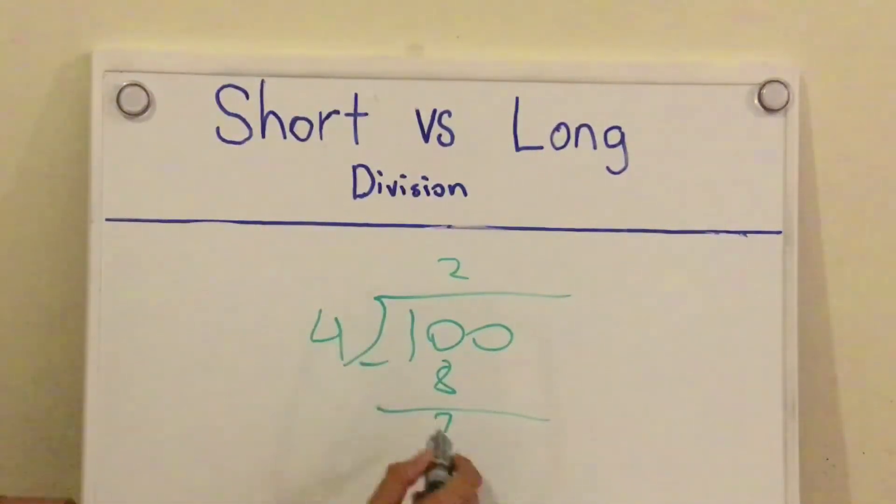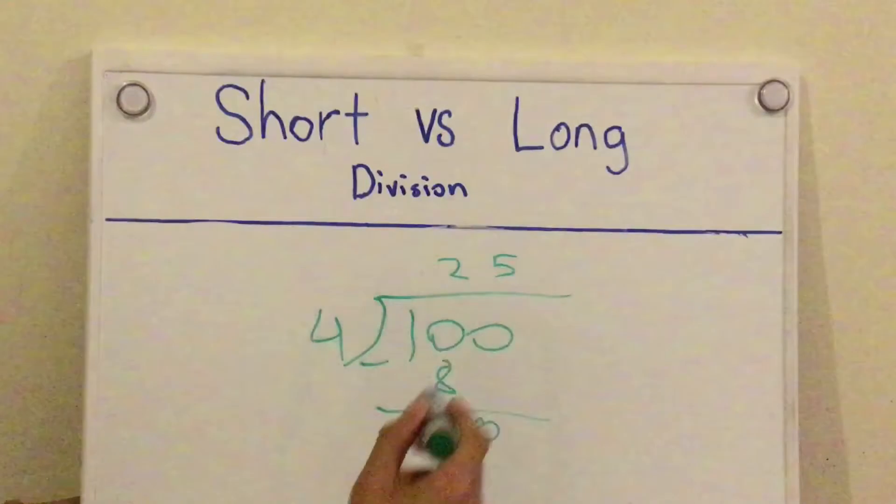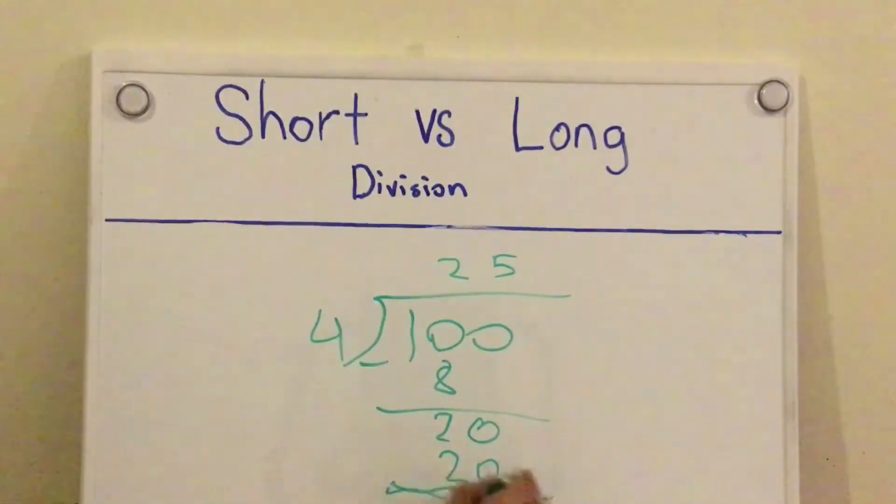2 divided by 4, you can't do. So we're going to bring down the 0. So 20 divided by 4, you should get 5. 5 times 4 is 20. And, oh, sorry, I'll do it again. Subtract, 20 minus 20 is 0.